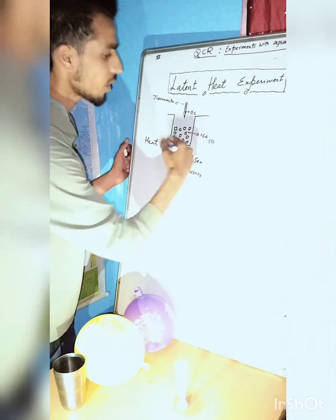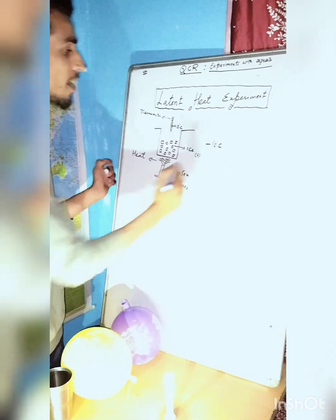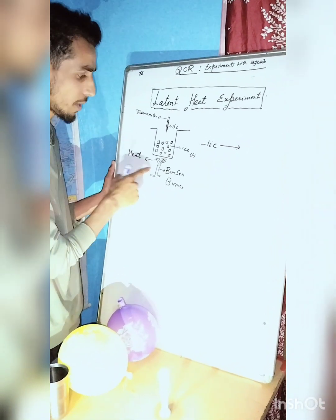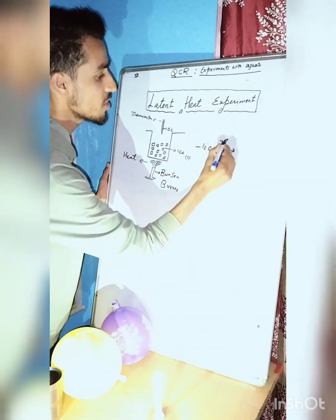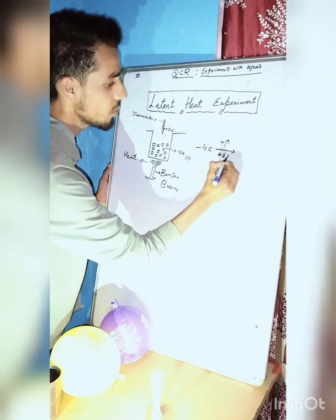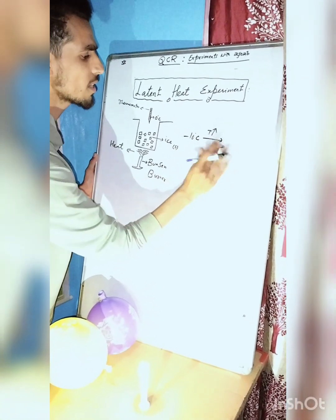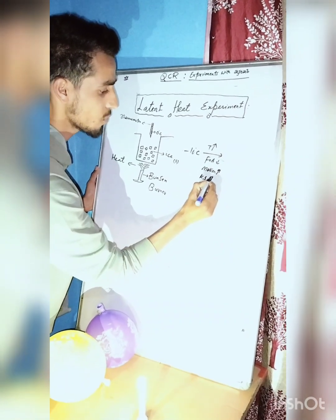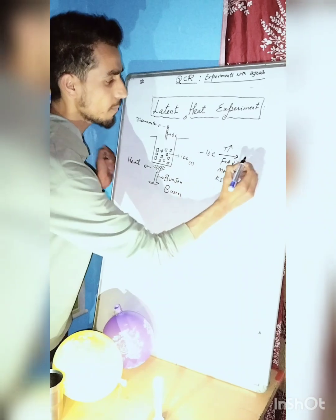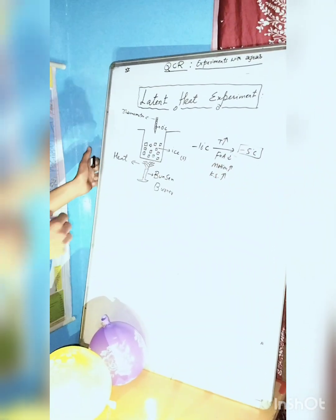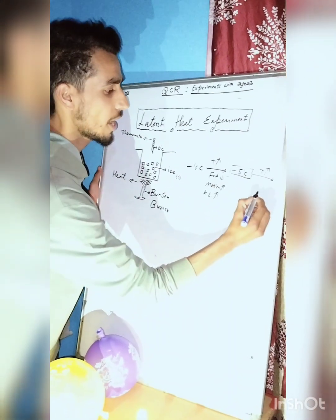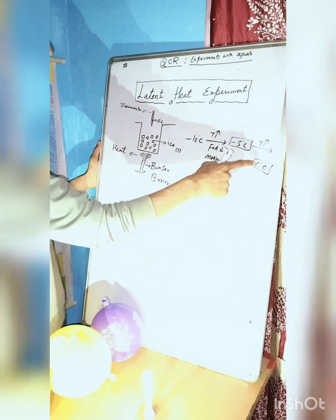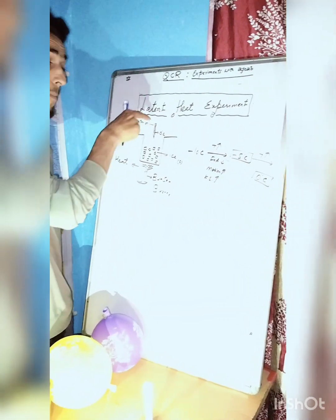In this experiment, I have taken a beaker filled with ice cubes. The temperature of the ice cubes is roughly minus 10 degrees. We are giving heat using a Bunsen burner. As temperature increases, kinetic energy increases and the force of attraction decreases. After some time, the temperature reaches minus 5 degrees, then continues increasing until we see 0 degrees Celsius on the thermometer embedded in this beaker.